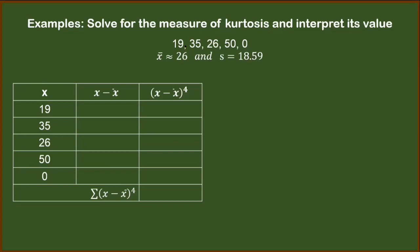Okay, time's up. The correct entries for this table are as follows. We have negative 7, 9, 0, 24, negative 26 for the second column.